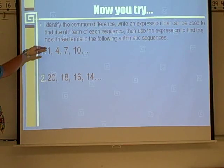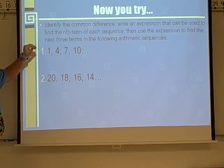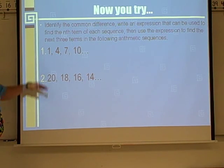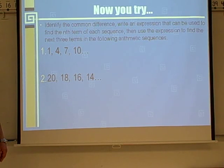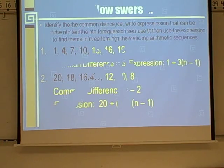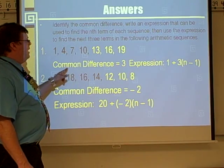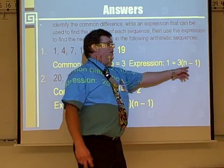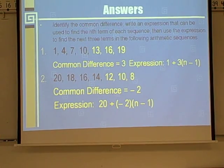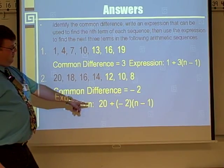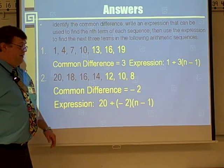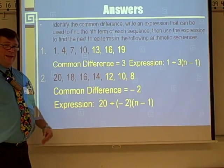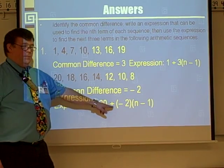Now you try. Pause the video and look at these two sequences. See if you can write an expression to find the nth term for both, and find the next three terms. Welcome back. The next three terms on the first one are 13, 16, 19. The common difference is 3, and the expression is 1 plus 3 times (n minus 1) — it must be in parentheses. The expression for the second sequence is 20 plus negative 2 times (n minus 1). The common difference is negative; when you do 18 minus 20, you get negative 2, so remember to plug in the negative value.